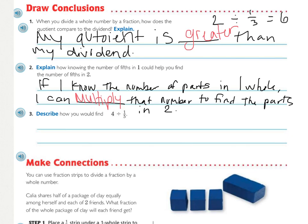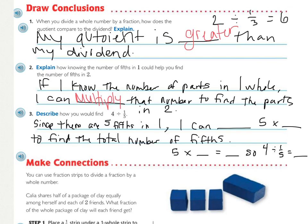So now let's think about how or describe how you would find four divided by one fifth based on what we've talked about here. How would, what's the first thing that you would do? Do you know the number of parts in a whole? Can you, what can you multiply? Think it through. All right, so now that you've thought about it, I've given you a sentence to kind of fill in.